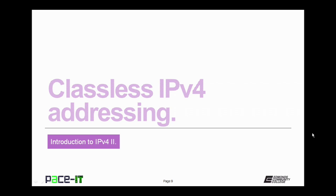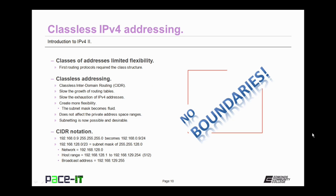Now let's move on to classless IPv4 addressing. The classes of addresses actually limited the flexibility of IPv4, partly because early routing protocols required the class structure. Despite over 4 billion possible IP addresses, flexibility was still lacking. Classless addressing, called Classless Inter-Domain Routing or CIDR, was developed to slow the growth of routing tables, slow the exhaustion of IPv4 addresses, and create much more flexibility. The subnet mask becomes fluid — it's not rigid with CIDR. It does not affect the private address space ranges, and with classless addressing, subnetting is now possible and highly desirable.